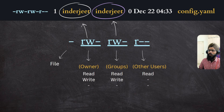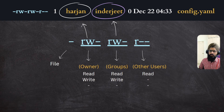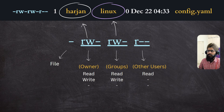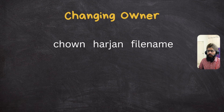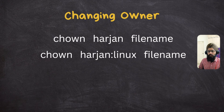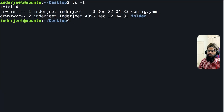In this example, config.yaml has 'inderjeet' as the owner and 'inderjeet' as the group. If you want to change the ownership from inderjeet to another user — in my case 'harjan' — and also change the group to 'linux', you use the chown command. Type chown followed by the username, then the file name. For changing the group too, type chown, then the username, colon, the group name, and the file name.